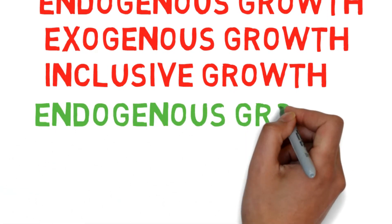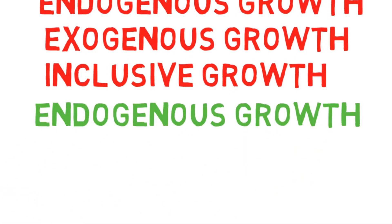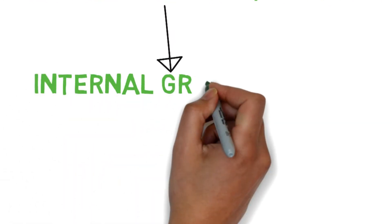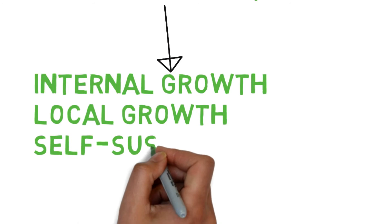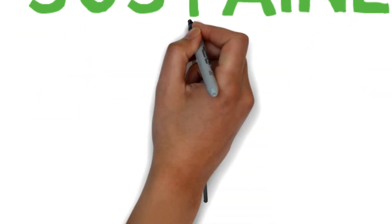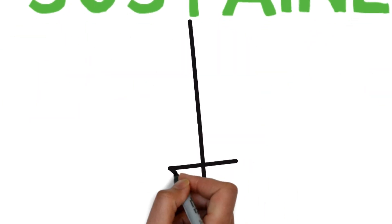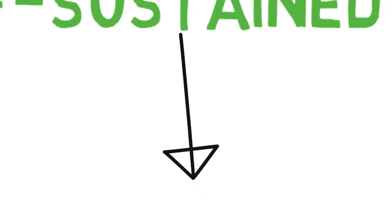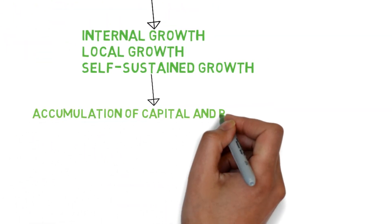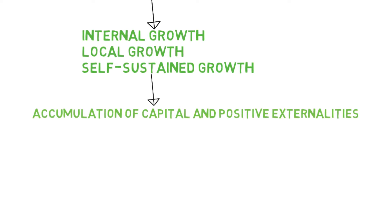Let's start with Endogenous Growth. As its name suggests, it's indicative of internal growth, or local growth, or self-sustained growth. It's based on two substrates, which are the accumulation of capital — fundamentally embodied by labor and capital — and the spill of positive externalities, which means positive effect without counterpart.